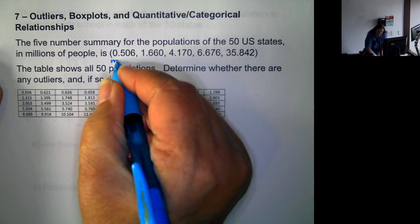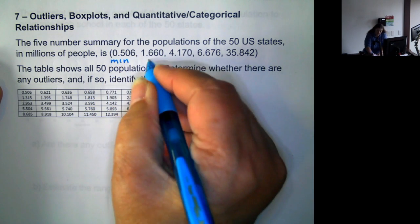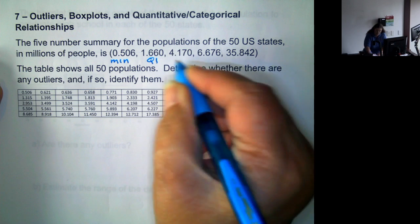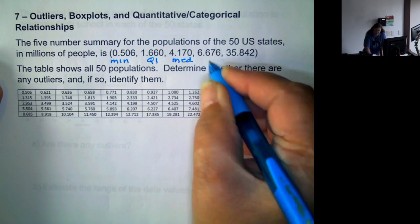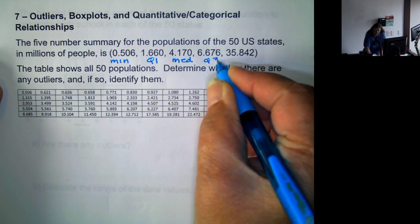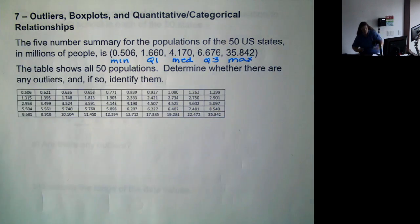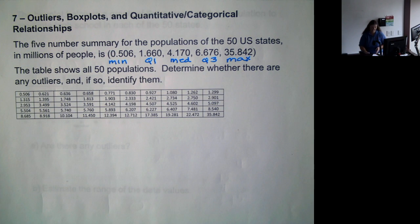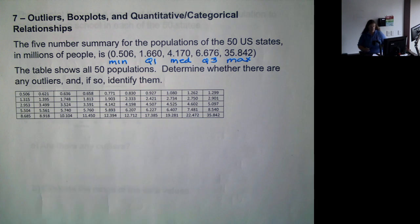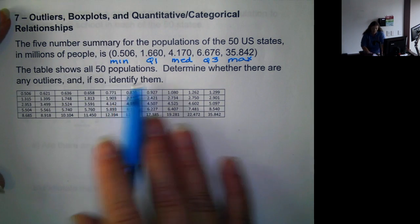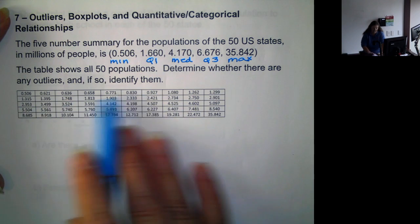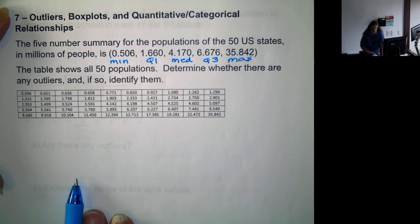Remember, the first number is the minimum, second is Q1, then we have the median, Q3, and the maximum. The table shows us all 50 populations in case you want to know what they are. But we will need to look at the table to find the outliers. We want to determine whether there are any outliers, and if so, which ones?